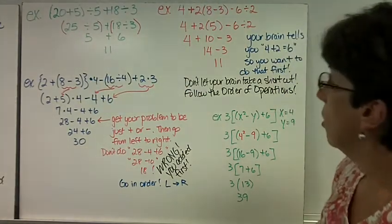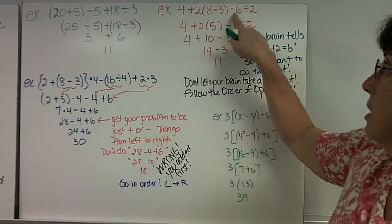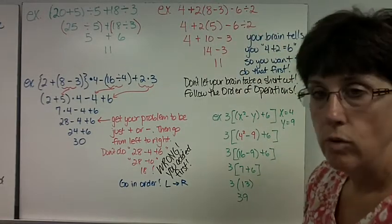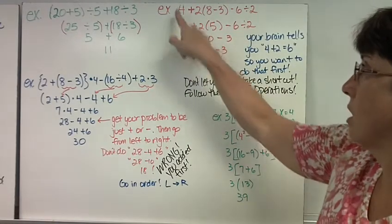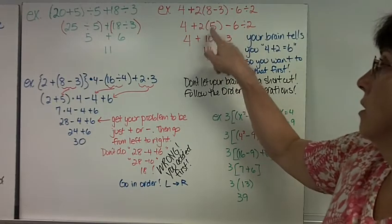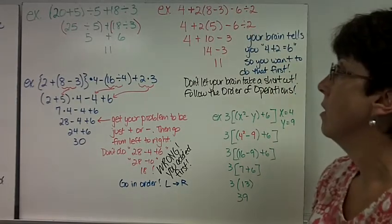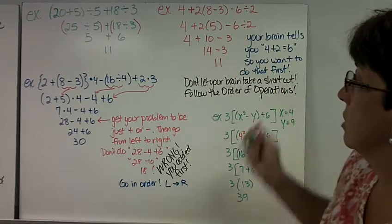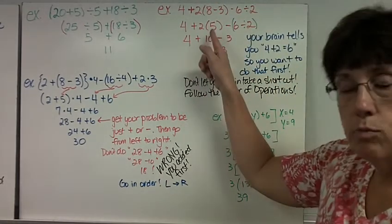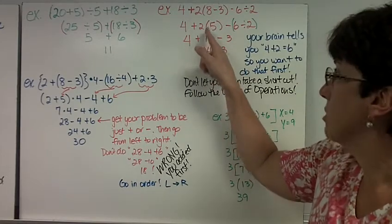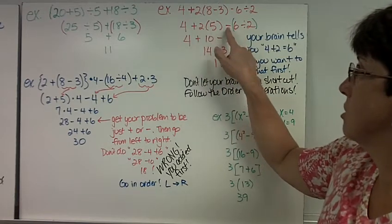Here's another example. 4 plus 2 times the quantity 8 minus 3 minus 6 divided by 2. So I'm going to do my parentheses first. 8 take away 3 is 5. Copy down the 4 plus 2 times 5 minus 6 divided by 2. So my operations are addition, multiplication, subtraction, division.